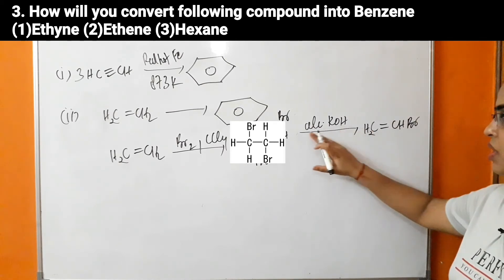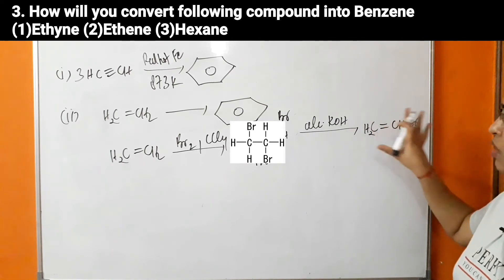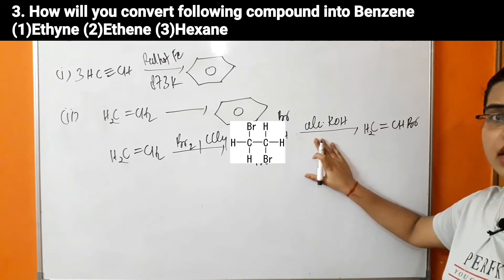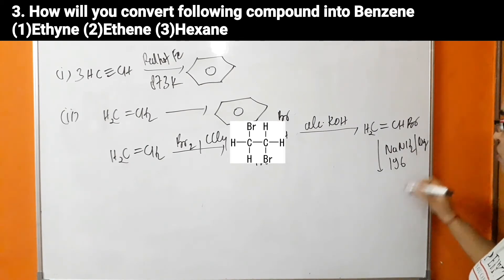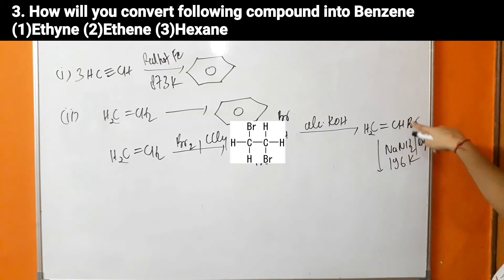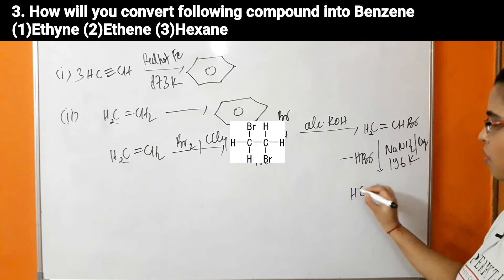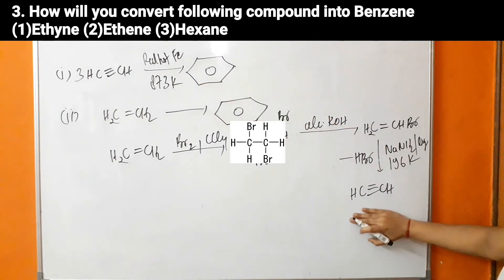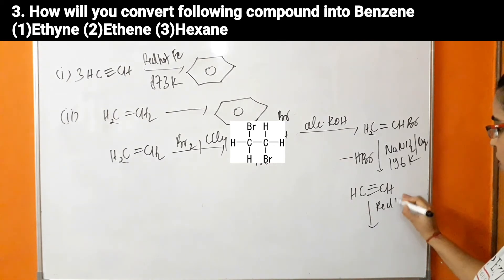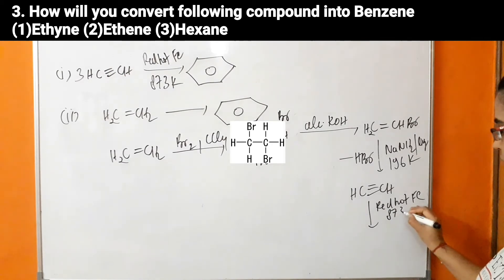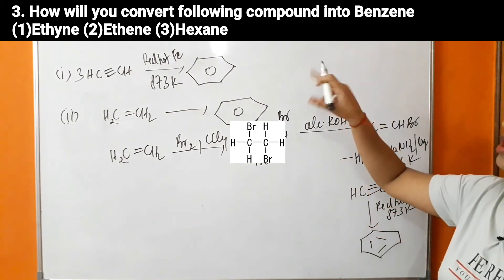Further dehydrohalogenation from vinyl bromide is tough in the presence of weak alcoholic KOH base, so we use a strong base — sodamide (NaNH₂) in the presence of liquid ammonia at 196 Kelvin. Bromine from the alpha carbon and hydrogen from the beta carbon are removed, giving HBr removal and formation of acetylene. Three moles of acetylene in the presence of red hot iron tube at 873 Kelvin give benzene.